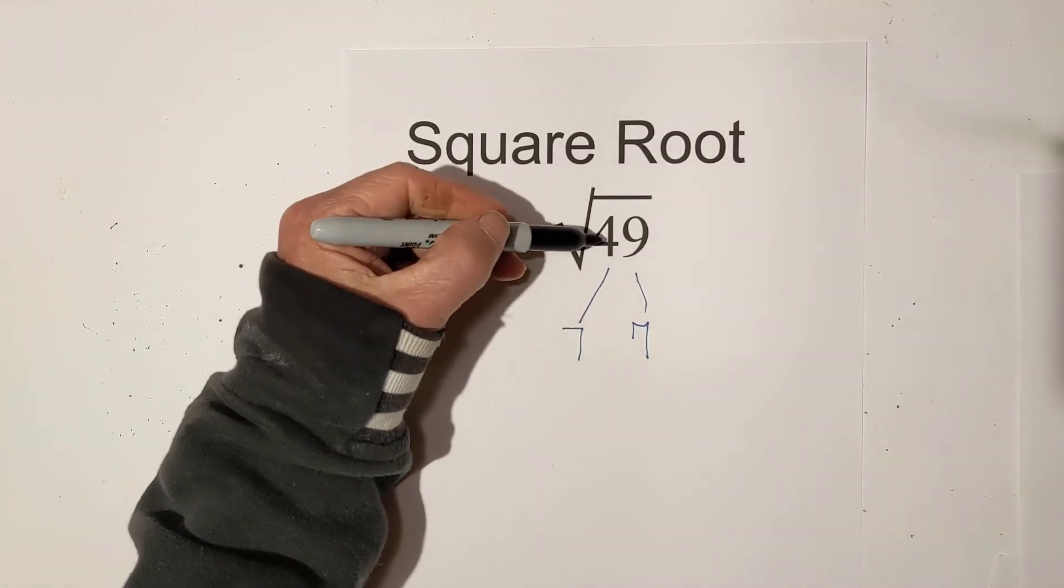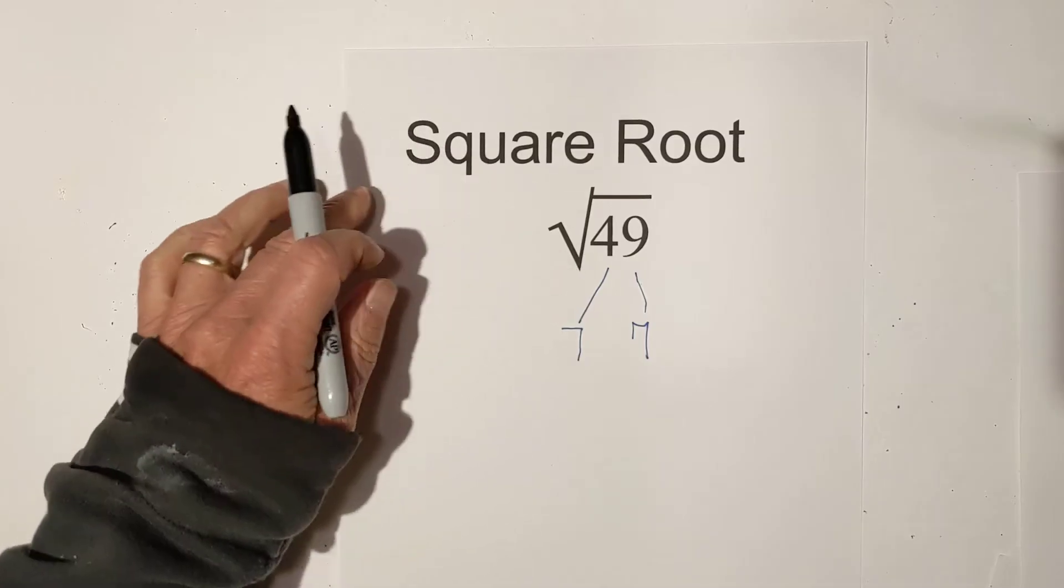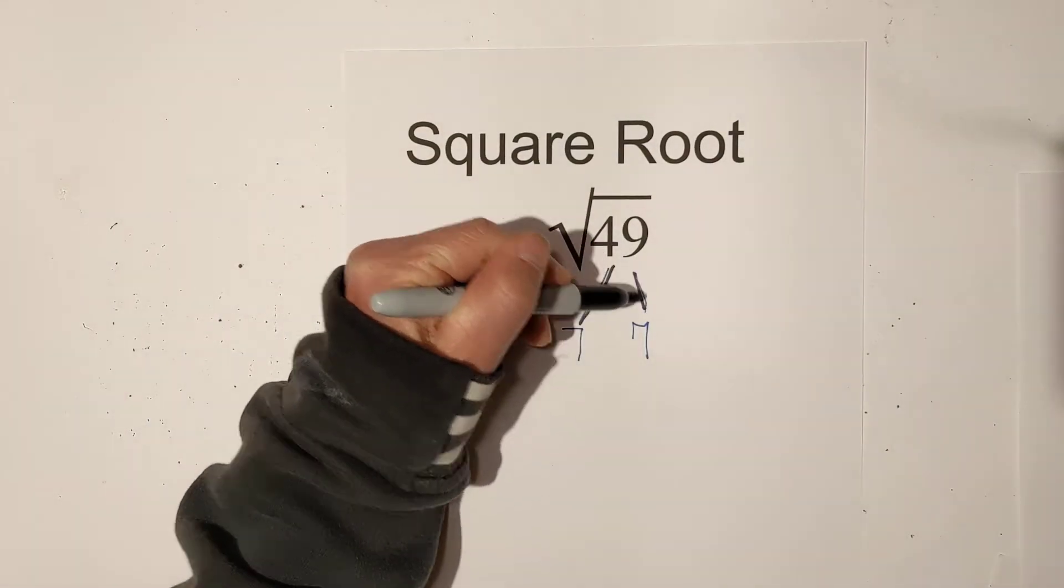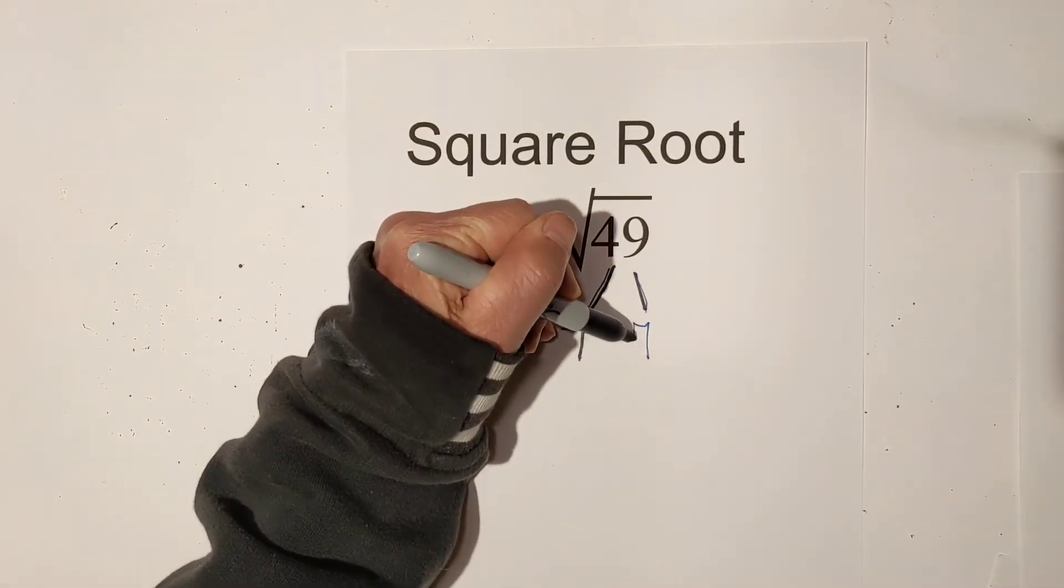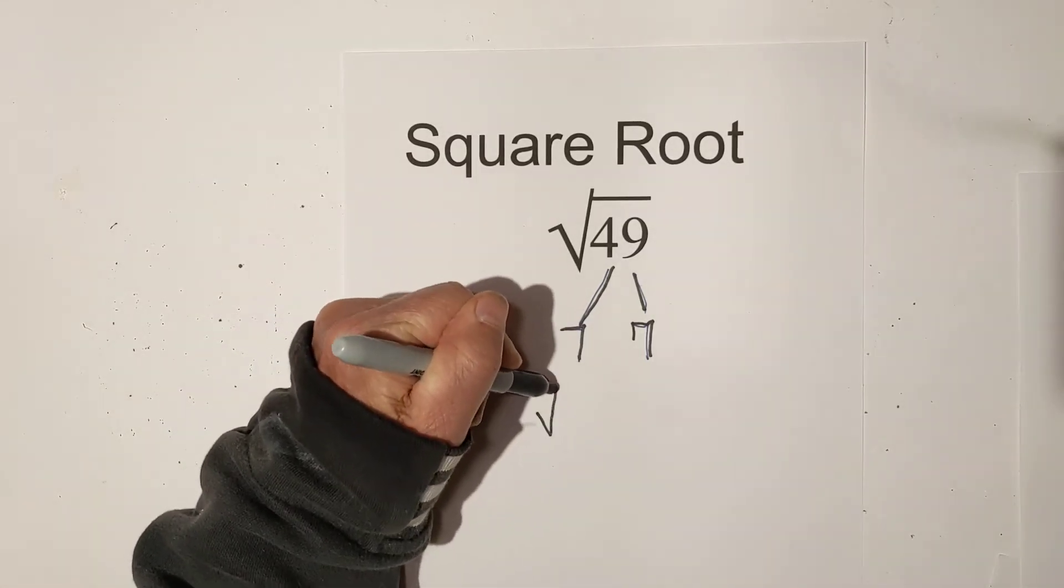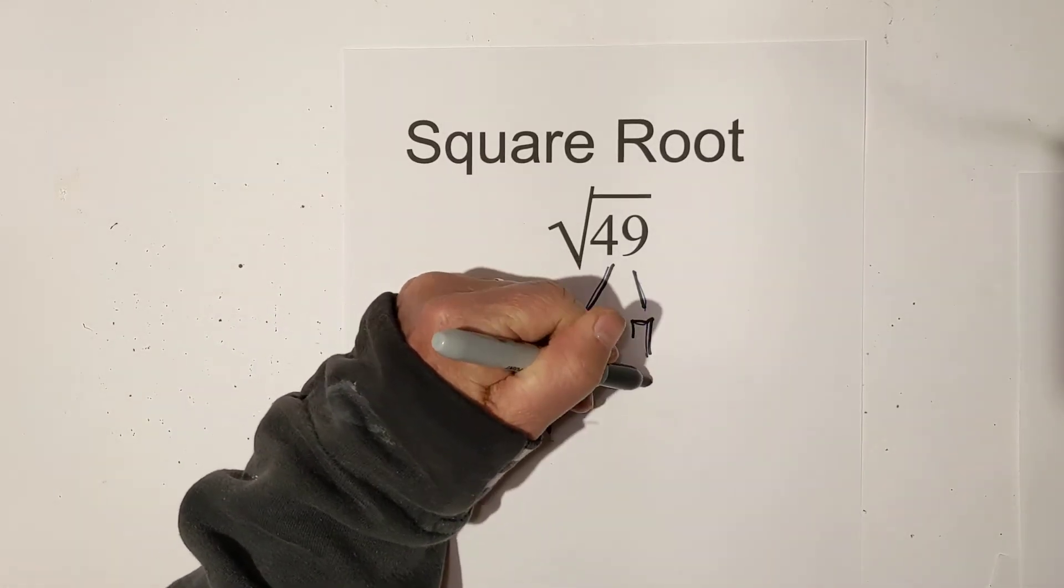Now, you may know that 49 is a perfect square, but if you use a factor tree, which I like to, you can multiply 7 times 7, that's why I have the two 7s here, and then you can place them under the square root symbol.